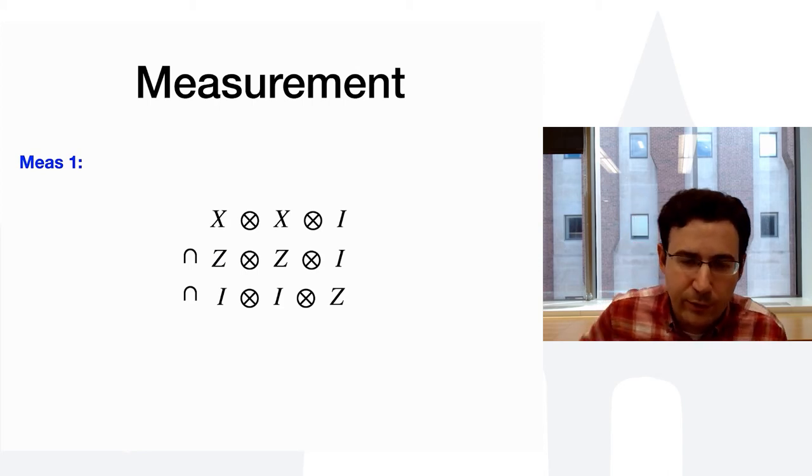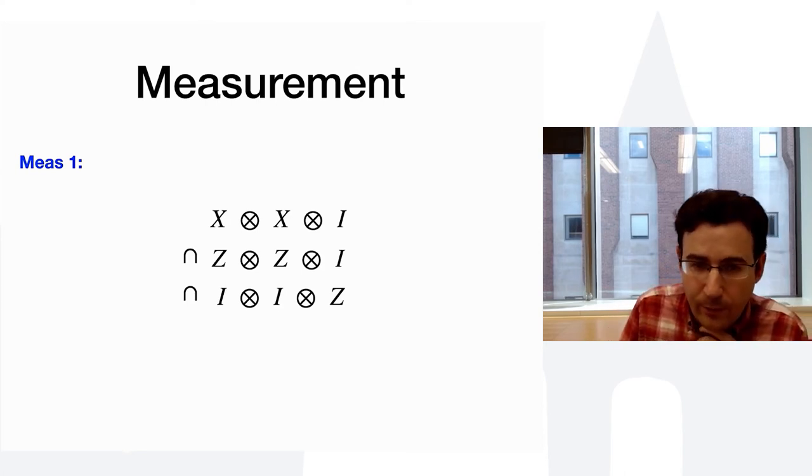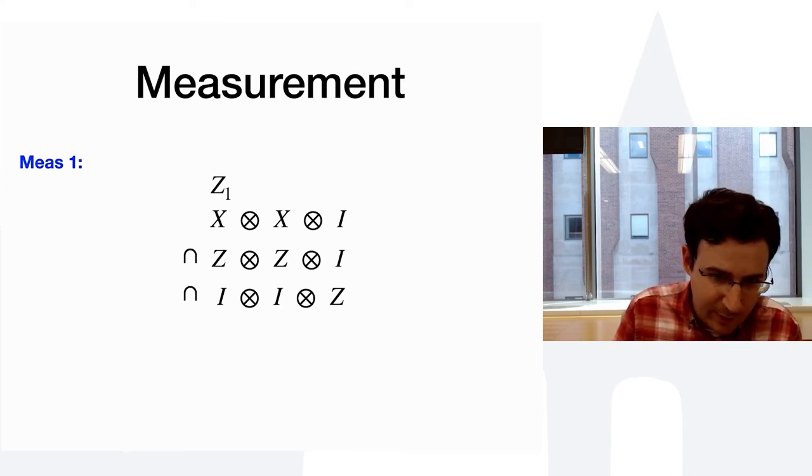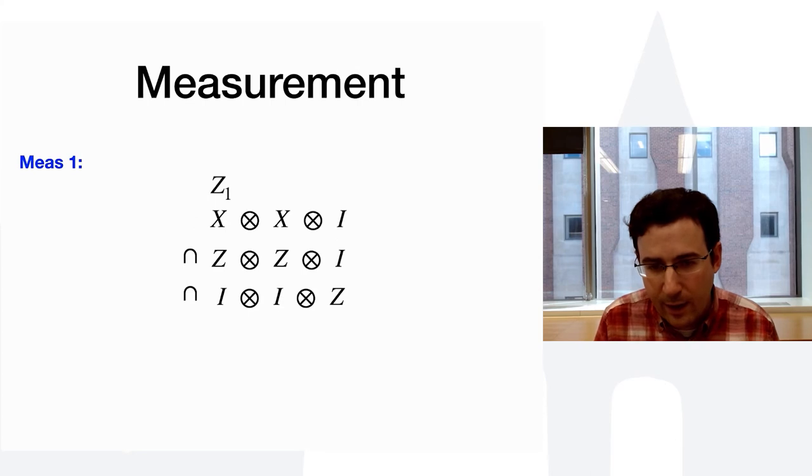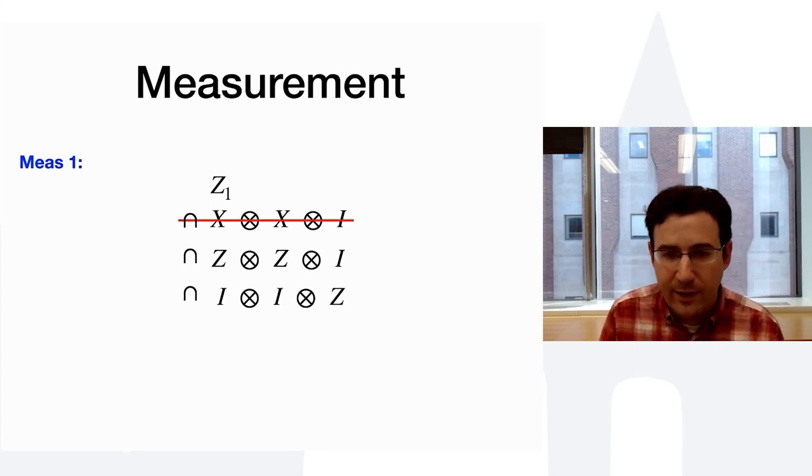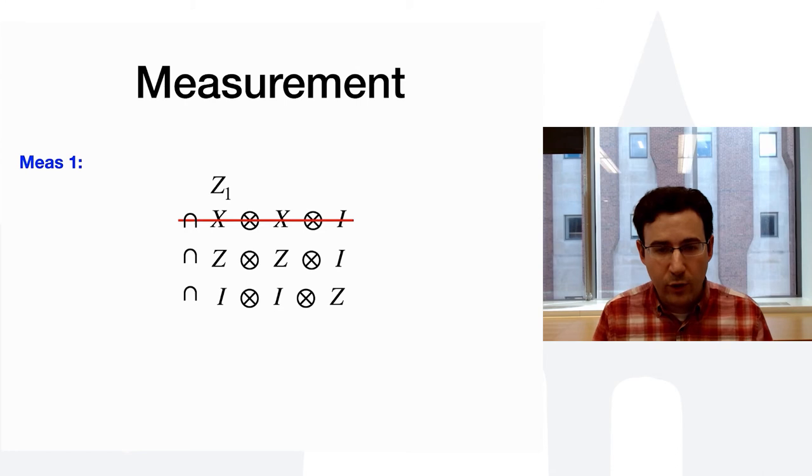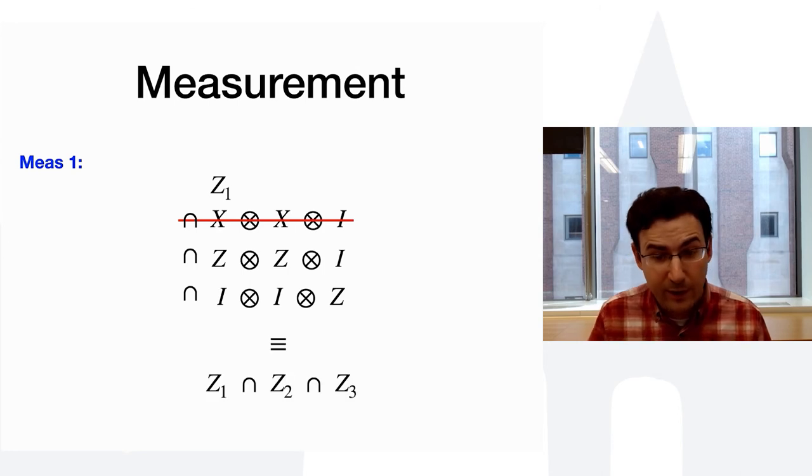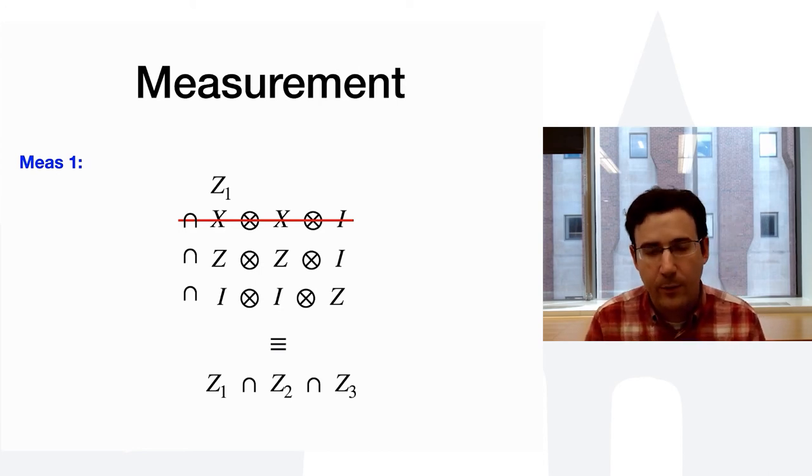Now, this actually proves useful for when I do measurement because, assume I'm measuring the first qubit here. Well, the outcome of measurement is necessarily going to be in the computational basis state if I measure the computational basis state. Now, I look at the remaining elements of my type here. And this x tensor x tensor i is incompatible with the z1. So, I drop that. And the remainder characterizes my state. And it actually characterizes it very well as z1, tensors z2, and tensors z3. So, in other words, I now have three separable qubits, each in a computational basis state. So, that's nice.